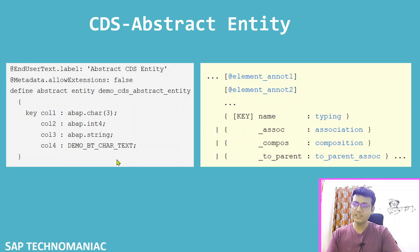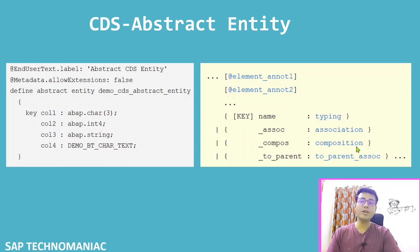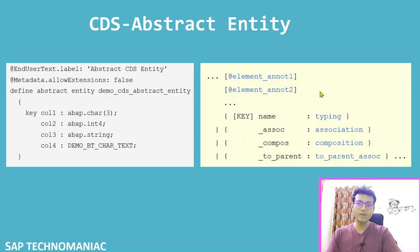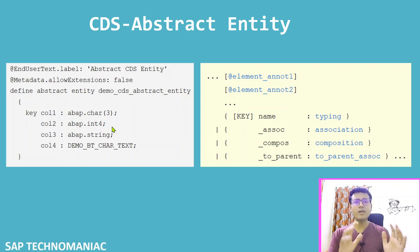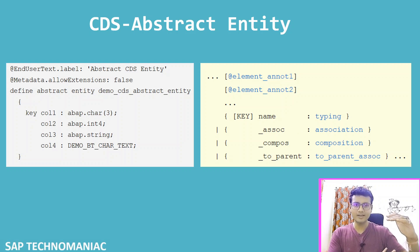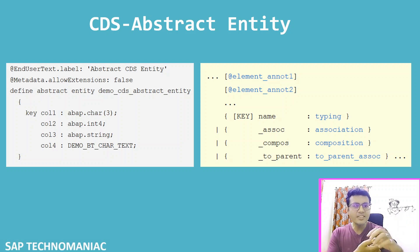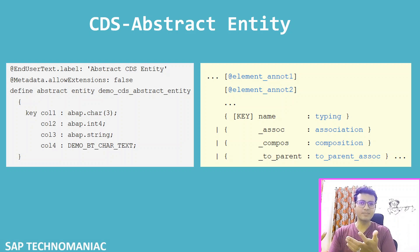You give your CDS abstract entity a name, you can define key fields and non-key fields. You can use associations, compositions, and to-parent associations. You can define all kinds of annotations — header-level and element-level. Everything you can do in a normal CDS entity you can also do here, but it will define only the skeleton and will not be used for fetching data from the database.